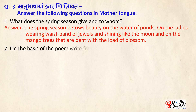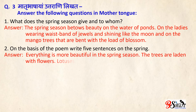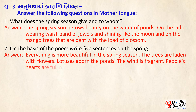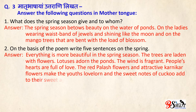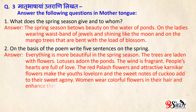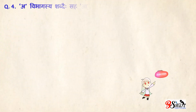Second: On the basis of the poem, write five sentences on the spring. Answer: Everything is more beautiful in the spring season. The trees are laden with flowers. Lotuses adorn the ponds. The wind is fragrant. People's hearts are full of love. The red palash flowers and attractive karnikar flowers enchant the youths. The sweet notes of the cuckoo add to the beauty. Women wear colorful flowers in their hair and enhance their beauty.